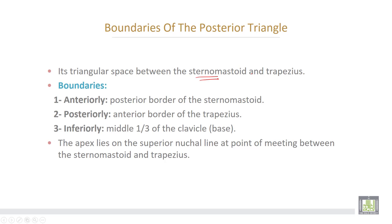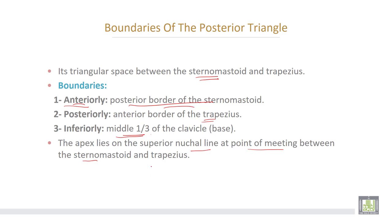Boundaries of the posterior triangle: anteriorly, it is bounded by the posterior border of the sternomastoid muscle; posteriorly, by the anterior border of trapezius; inferiorly, formed by the middle third of the clavicle. The apex of the triangle lies on the superior nuchal line at the point of meeting between the sternomastoid and trapezius muscles.